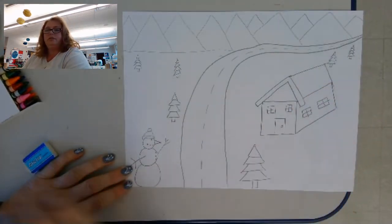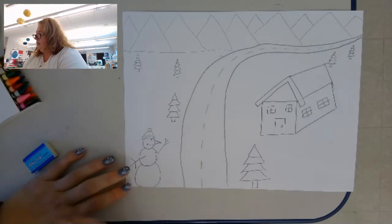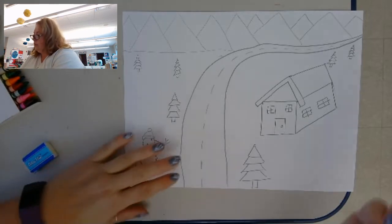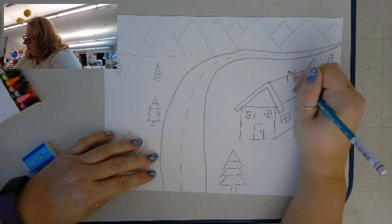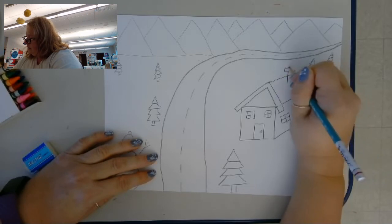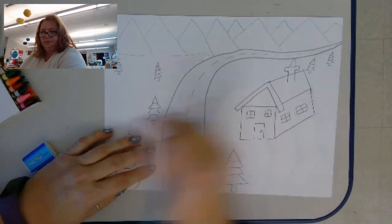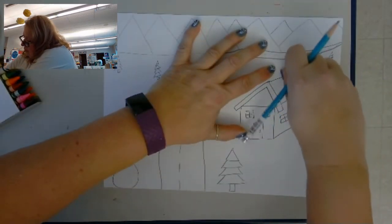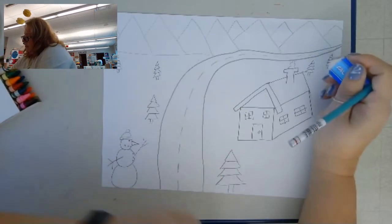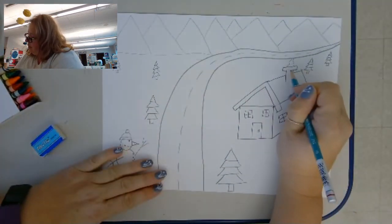And like the roof of the house could be covered with snow. Oh, I know what we forgot. What I forgot. Chimney. We want a little chimney here. And we want to have some smoke coming out of it. And you can make it look like bricks if you want.